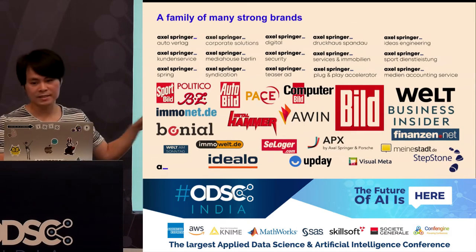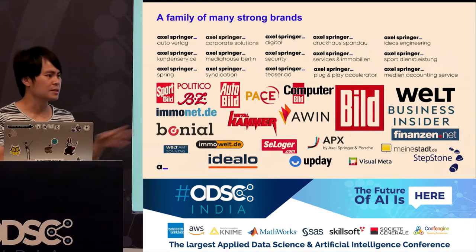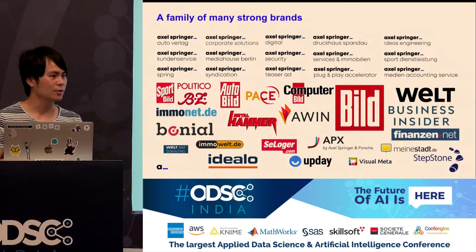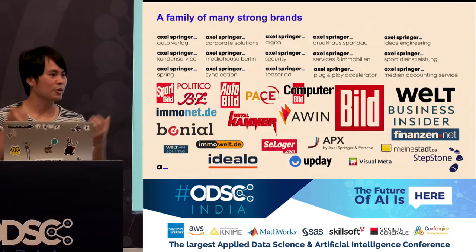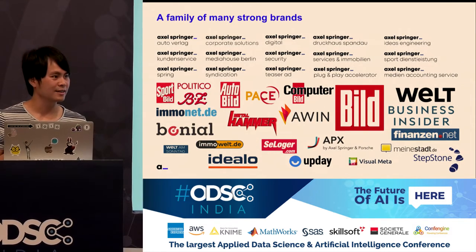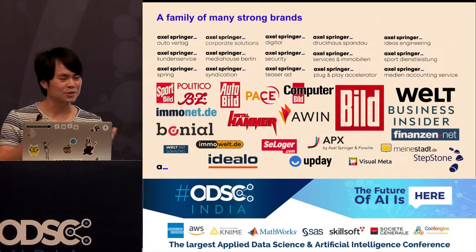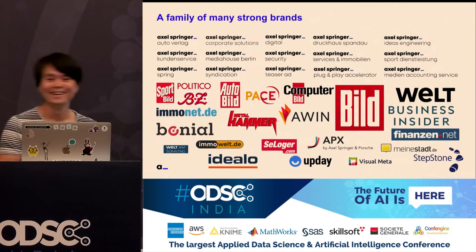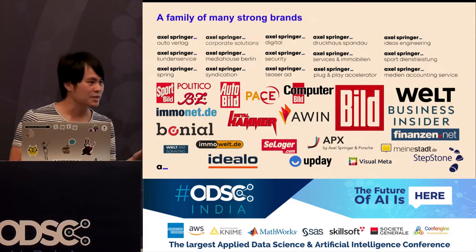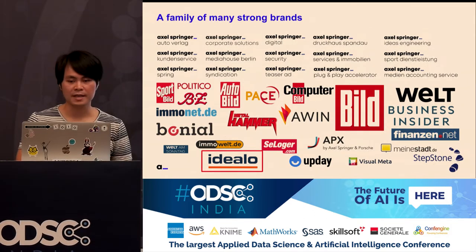Here are some of the brands. Some of you are probably aware of Business Insider — this is a company owned by Axel Springer, very popular in the US and worldwide, especially for their videos. But today I want to focus on Idealo, which is a price comparison website.